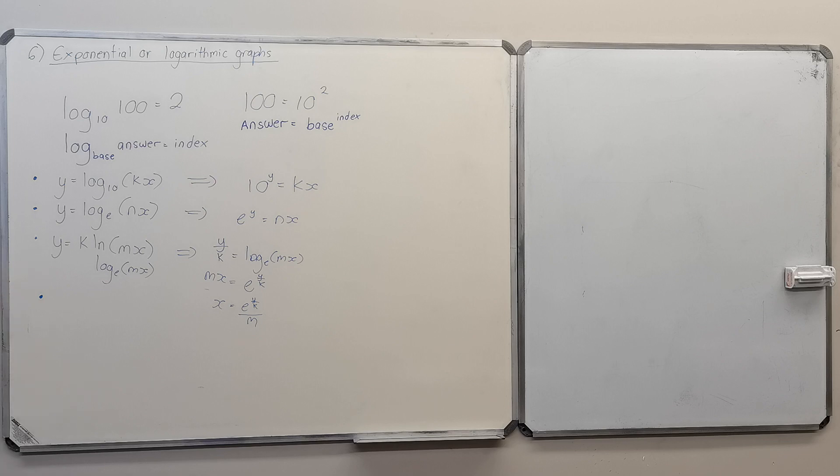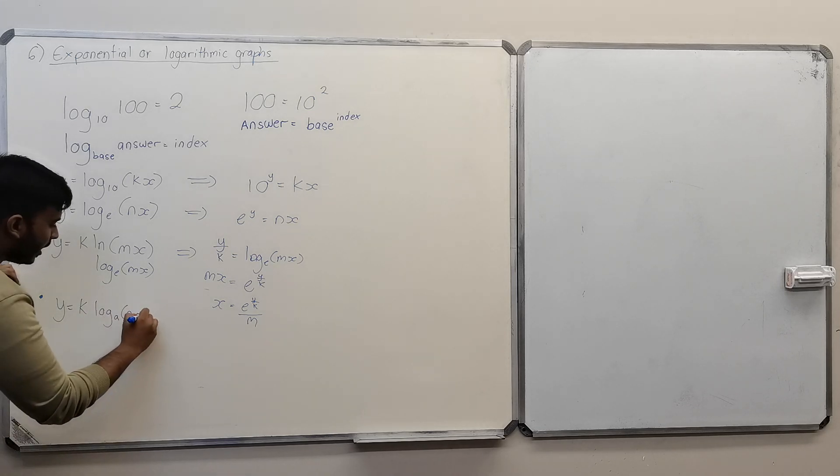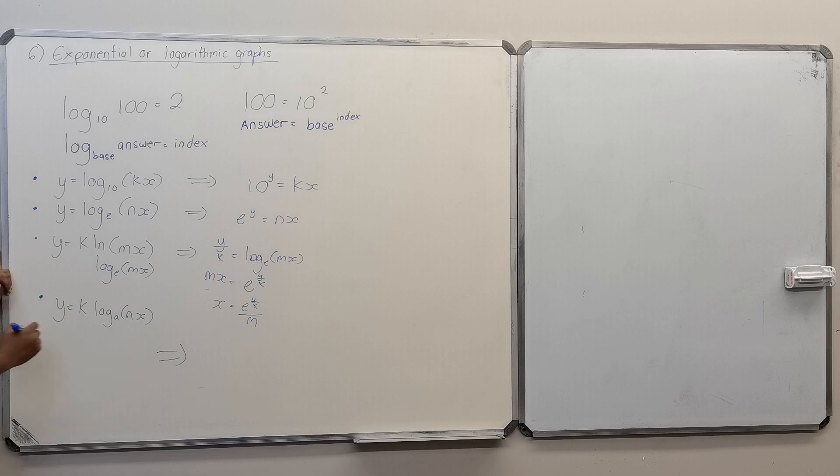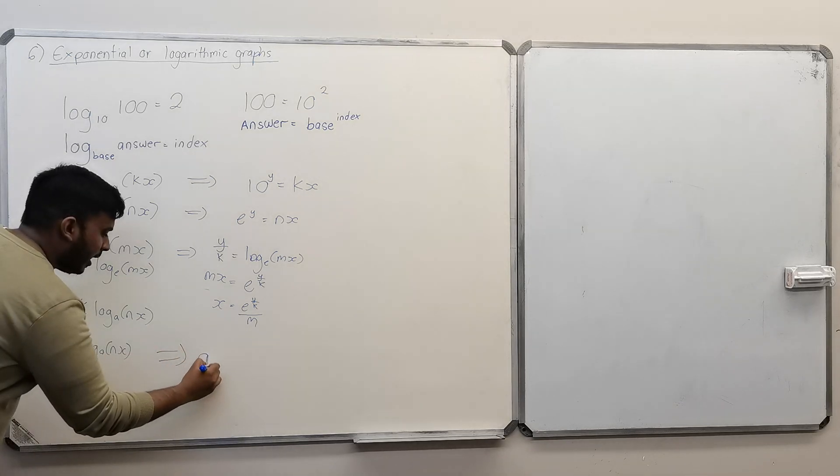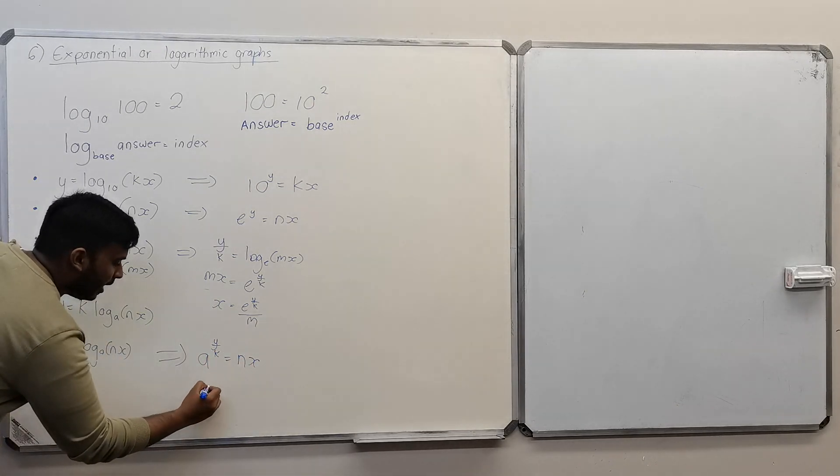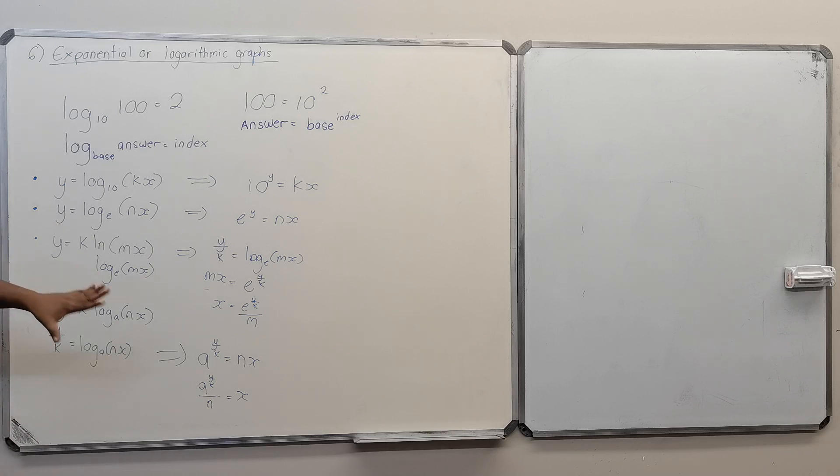And then one more you got is y = k log_a(nx). And if you convert this into an exponential form, this here would become y/k = log_a(nx). Log base answer equals index. Base would be a, your index would be y/k, equal to nx. And if you make that the subject of the formula, it will be a^(y/k) all over n equals x.